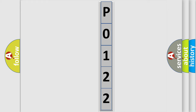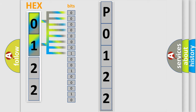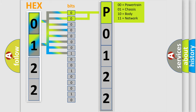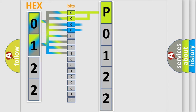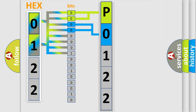The error code is split into two bytes consisting of 16 bits. One bit is the basic unit that each computer works with. The bit has two logical states: 0, low level, and 1, high level. By combining the first two bits, the basic character of the error code is expressed. The next two bits determine the second character. The last bits of the first byte define the third character of the code.